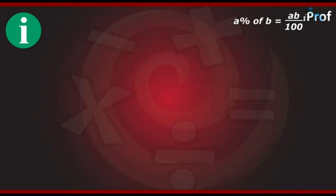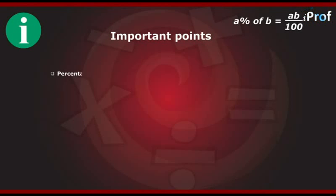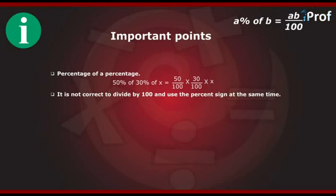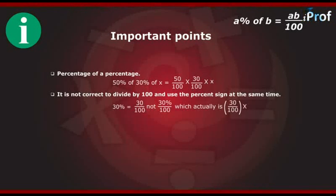Let us go through some important points regarding percentages. What is percentage of a percentage? For example, 50% of 30% of x is equal to 50 by 100 into 30 by 100 into x. It is not correct to divide by 100 and use the percent sign at the same time. 30% is equal to 30 by 100, not 30% divided by 100, which actually is 30 by 100 into 1 by 100.